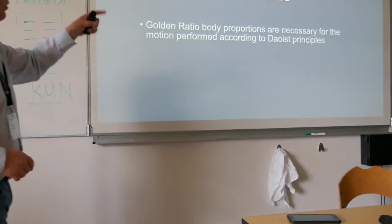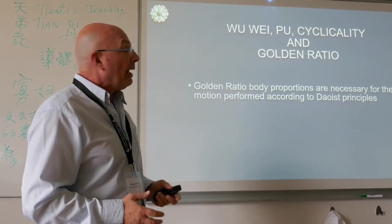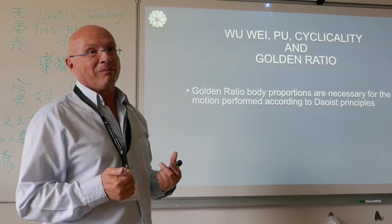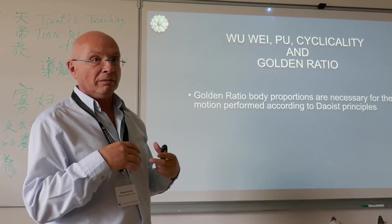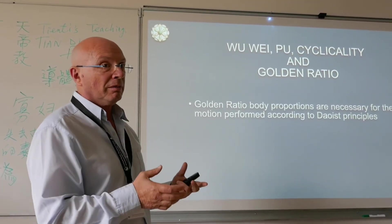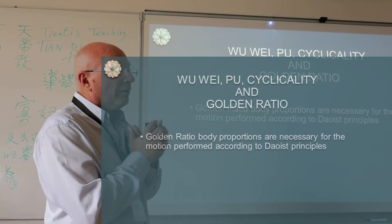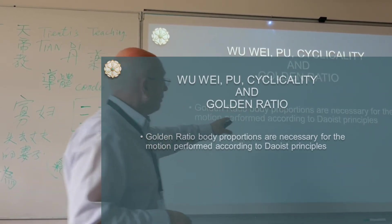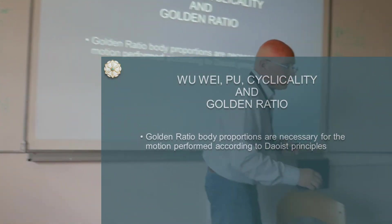Wu Wei, Pu, and cyclicality are actually based on the proportions of the golden ratio. The beauty and Taoist principles have very close relations. Golden ratio proportions are absolutely necessary for that.